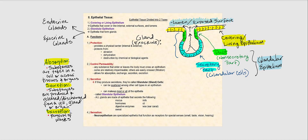Epithelial tissue is divided into two types: covering or lining epithelium, and glandular epithelium. Covering or lining epithelium covers or lines internal surfaces, internal passageways, ducts, canals, as well as external surfaces and lumen. Glandular epithelium is epithelia that forms glands.